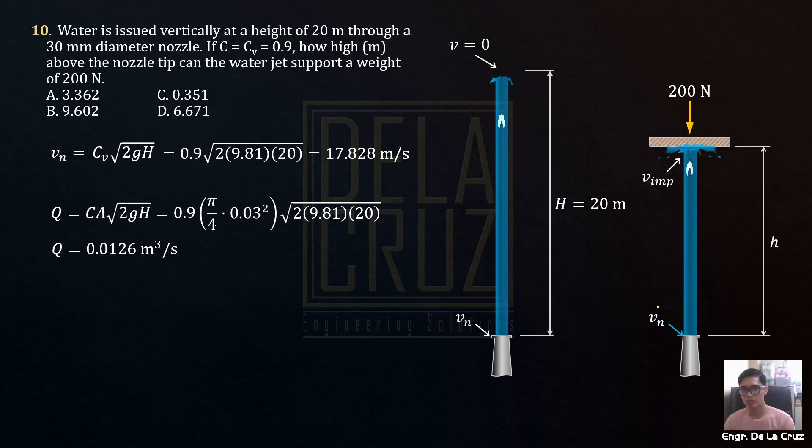Then after that, since we already know the velocity at the nozzle, we need the impact velocity. We can solve that by equating the hydrodynamic force exerted by the water onto the plane. So that hydrodynamic force, to withstand this, it should be in equilibrium. 200 N. And the formula for hydrodynamic force is rho Q V impact.